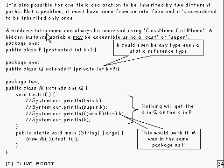A hidden static name can always be accessed using className.FieldName. And a hidden instance variable may, and I stress that word may, be accessible using cast or super. Sometimes you can't do it that way. And here's an example to demonstrate that.